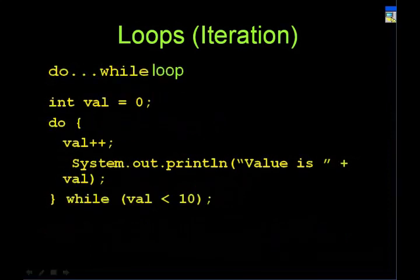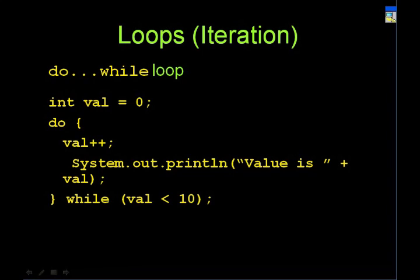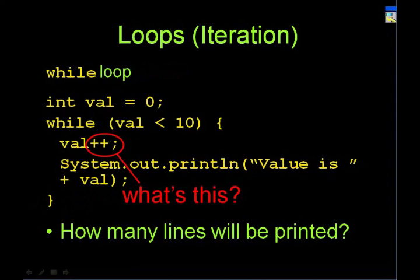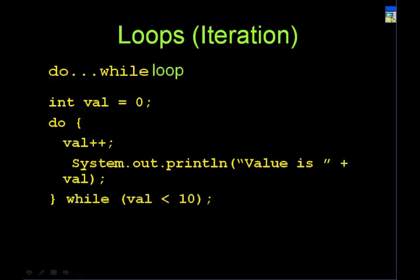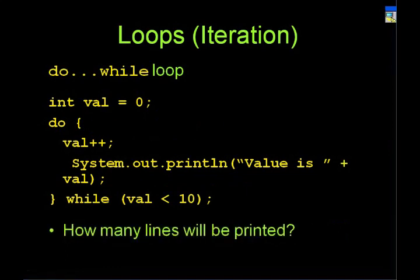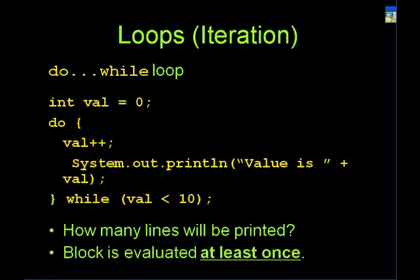A do loop is similar — you start with integer value set to zero. What a do loop does is run the code first, and then check if the condition is true before running it again. In a while loop, you check the condition first, then run the code. But in a do loop, you run the code at least once, then check if the condition is true. If it is, you go back inside and continue. How many lines will be printed? Ten — the key thing to note is that the block is evaluated at least once.